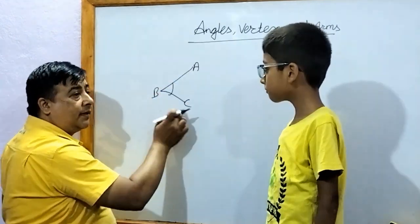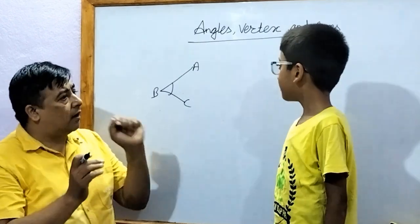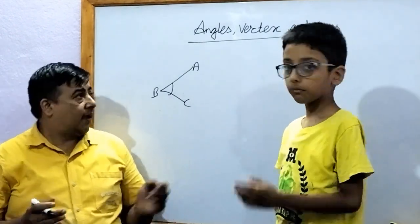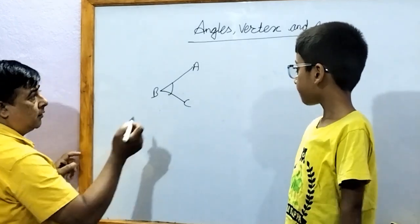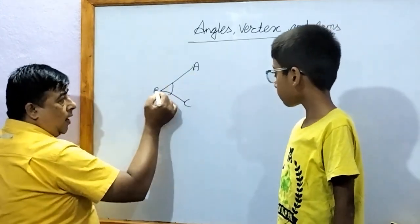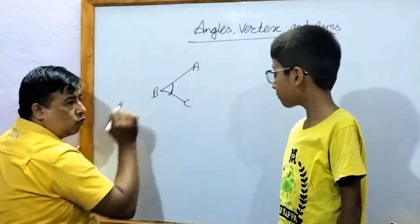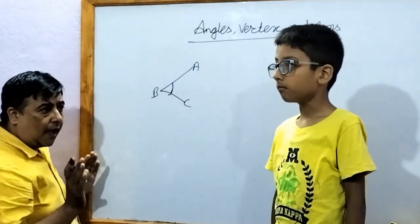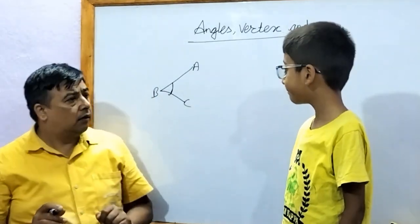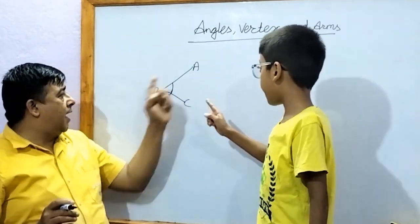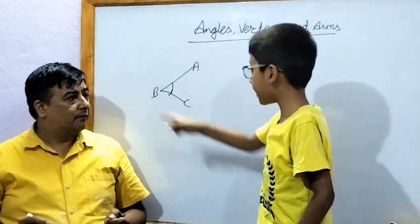In the given figure A, B, C, you have to tell me about the angles — which one is the angle? When two lines meet at a point, the space between these two lines is called the angle. The angle is B.